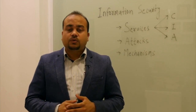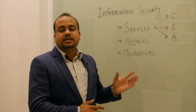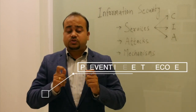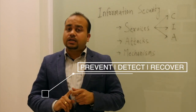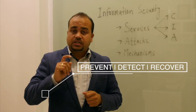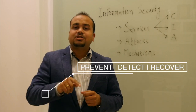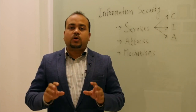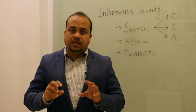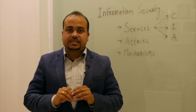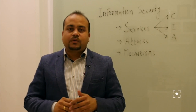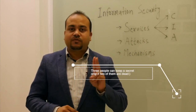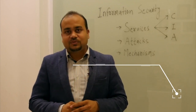To summarize, the goal of information security is to prevent attacks, detect them on time, and try to recover if you have been attacked. That is all about information security. I'll sum up with a quotation from Benjamin Franklin: 'Three may keep a secret, if two of them are dead.' Thank you.